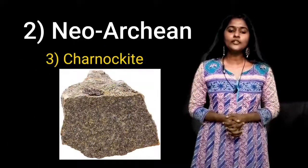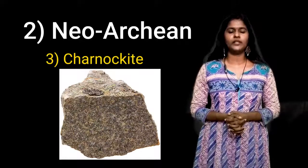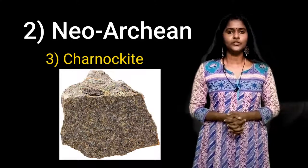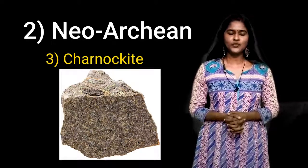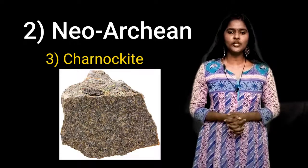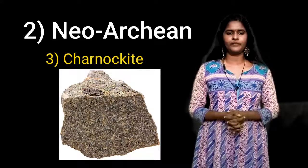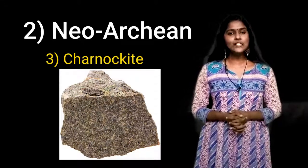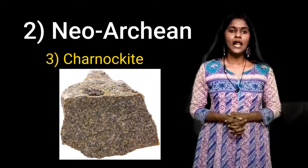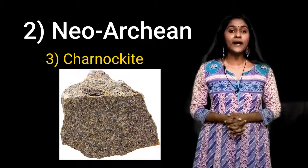The third category is the Charnockite group. It is a dominant rock type in the central and northern parts of Kerala. Charnockite in Kasargod, North Kannur and North Wyanad district are actually the extension of the Coorg Granulite Massif of Karnataka. Charnockite in South Wyanad, North of Kozhikode, Malappuram and Palakkad is the continuation of the Nilgiri Massif.